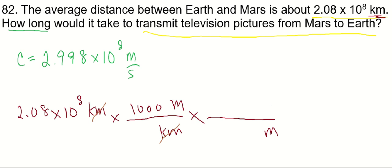And then seconds is the desired unit, so that goes on the other side of that. Right, meters will cancel out. So the conversion factor here is 2.998 times 10 to the 8 meters per second.